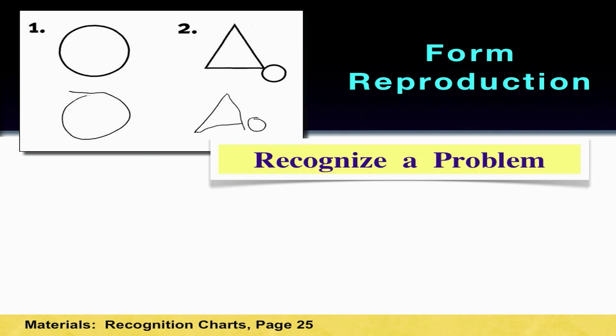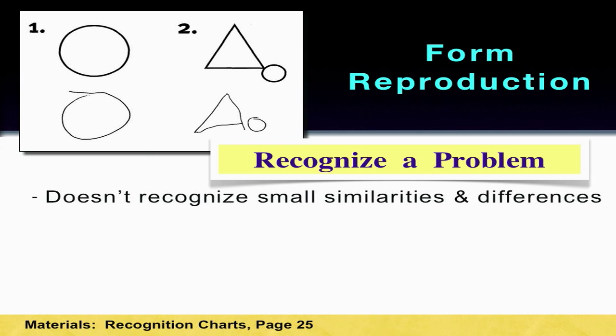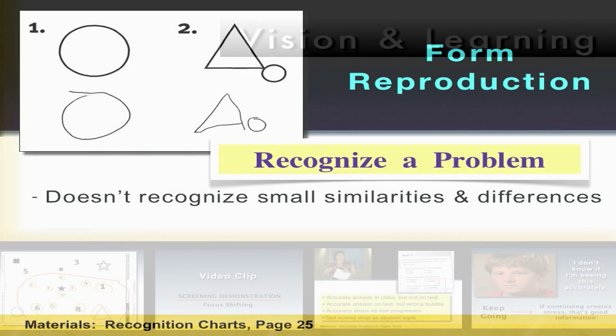So how do you recognize a form reproduction problem? Well, first of all, they don't recognize the small similarities and differences.